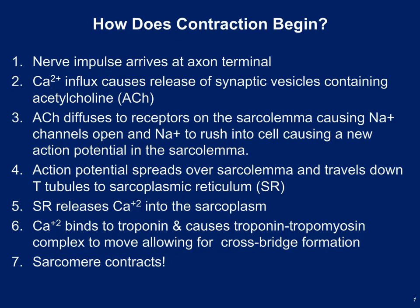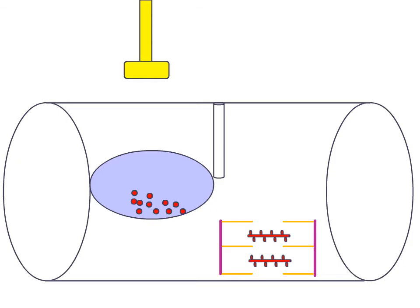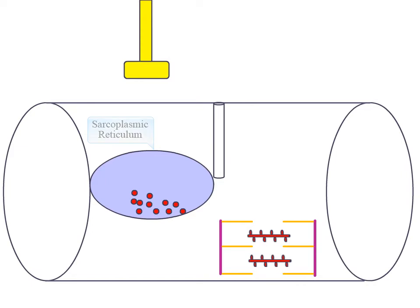Now we'll talk about the electrical and chemical events necessary for muscle contraction — excitation-contraction coupling — which happens in seven steps. We have our skeletal muscle cell bound by the sarcolemma, a T-tubule for electrical charges to travel deep into the cell, and the sarcoplasmic reticulum — the blue organelle that stores and secretes calcium (the red dots). At the bottom is a representation of the sarcomere, with pink Z-lines at the ends, orange actin thin filaments bound to the ends, and myosin thick filaments with golf club heads in the middle.